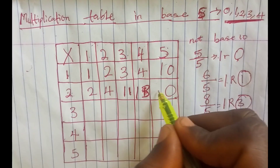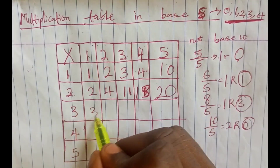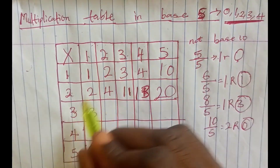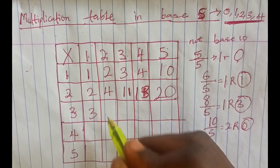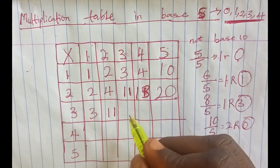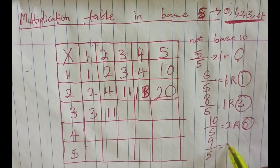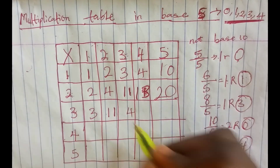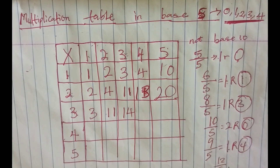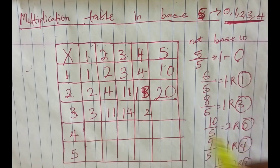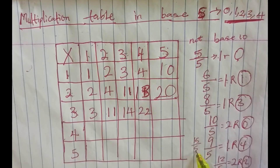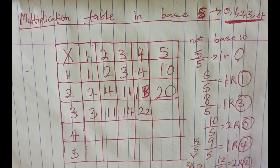For the 3 times table: 3 times 1 is 3. For 3 times 2, we get 6; 6 divided by 5 gives 1 remainder 1. For 3 times 3, we get 9; 9 divided by 5 gives 1 remainder 4 — write the remainder 4, bring down the whole 1. For 3 times 4, we get 12; 12 divided by 5 gives 2 remainder 2 — write remainder 2, carry the 2. For 3 times 5, we get 15; 15 divided by 5 gives 3 remainder 0.